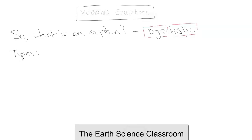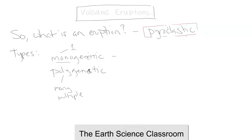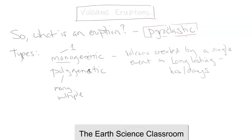The main two I want to look at are monogenetic and polygenetic. Monogenetic means singular — one — while poly means many or multiple. A volcano can be created by a single volcanic eruption event. These monogenetic eruptions are generally long-lasting over the course of hours or days.